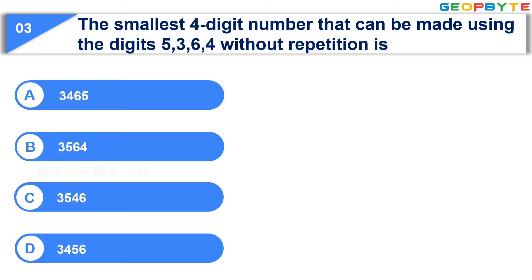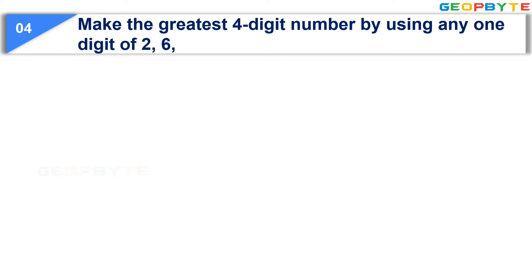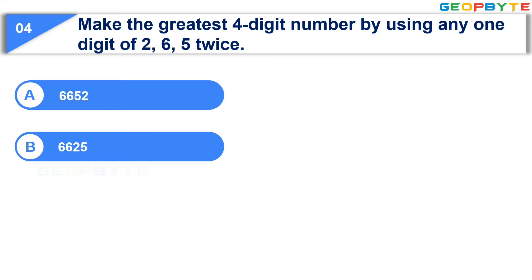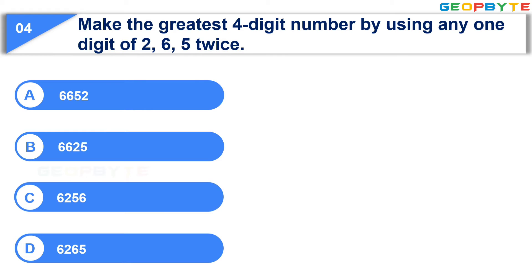Your time is up and the correct answer is Option D: 3,456. The next question is: Make the greatest 4-digit number by using any 1 digit of 2, 6, 5 twice — Option A: 6,652, Option B: 6,625, Option C: 6,256, Option D: 6,265. Your time starts now.